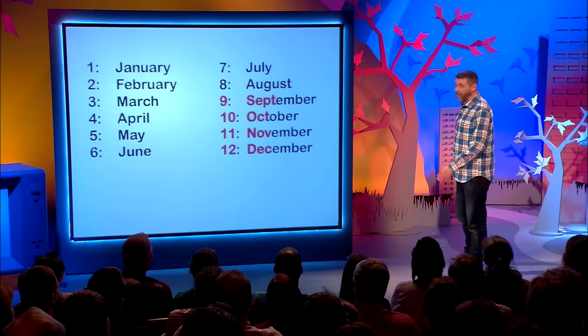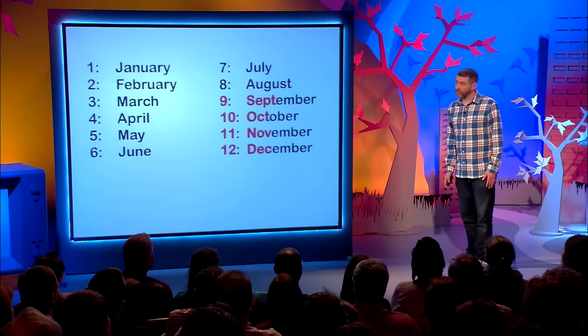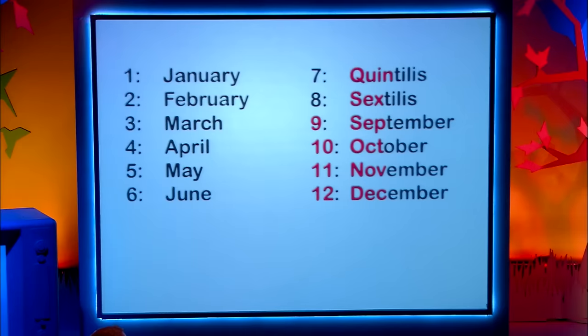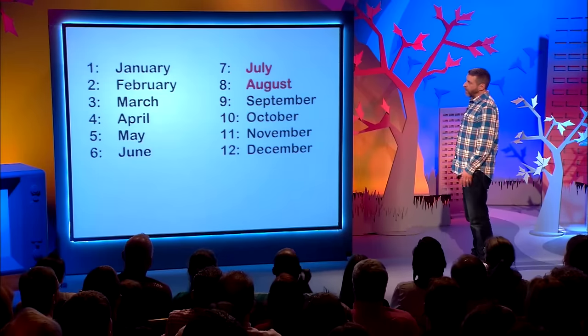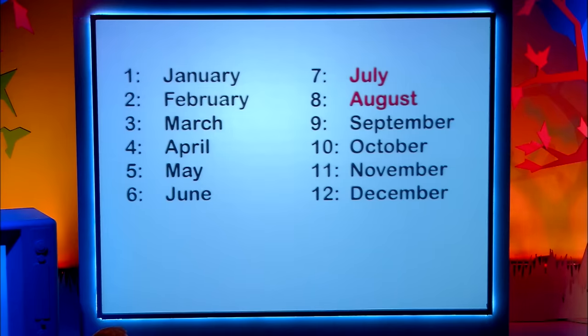I'll tell you why that's happened — it's because of the bloody Romans. Before that we used to have months called Quintilis and Sextilis. It used to be five, six, seven, eight, nine, ten. But then the Romans got all egotistical on us. They wanted to name two months after their emperors — Julius Caesar and Augustus Caesar.